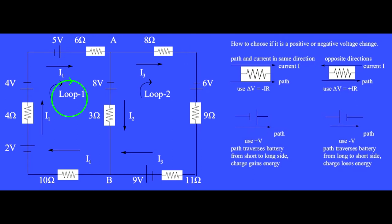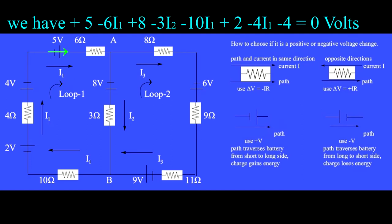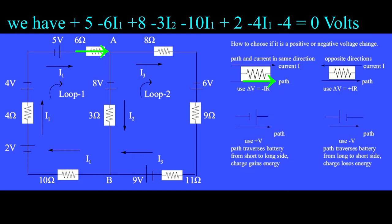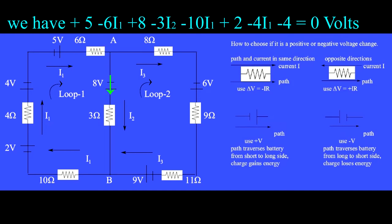Traversing loop 1 in a clockwise direction, starting from this point, the charge first crosses the 5 volt battery, and the path is moving in the correct direction, from short to long sides of the battery symbol. This means that there is a positive energy gain of 5 volts, or 5 joules per coulomb. The path next travels through the 6 ohm resistor. The direction of the path is to the right, and the direction of the assumed current I1 is to the right, so we write the voltage change as minus IR, which would be minus 6I1. The path next moves the right way, from short to long, through the 8 volt battery, so we write plus 8 volts. The path next moves through the 3 ohm resistor. Since the path direction is downward and the current I2 is downward, both arrows point in the same direction, and we choose minus IR, or minus 3I2, as the voltage change.